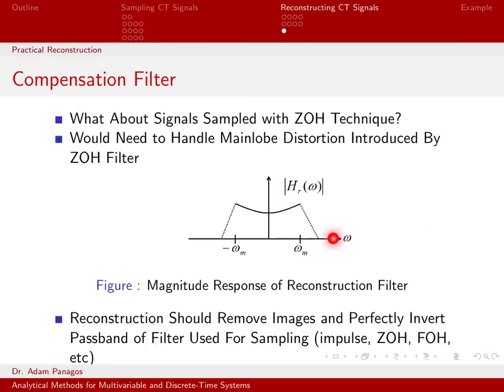So this reconstruction filter for zero-order hold sampling perfectly removes all the images and perfectly inverts the passband of the original filter that we used. This is basically what we want to do for any type of sampling technique. For zero-order hold filtering, we had a low-pass filter that rolled off in a certain way, so we undo it with the inverse. If you do a first-order hold filter, it's going to have a different characteristic. Whatever that sampler characteristic has in the frequency domain to begin with, you want to invert it when you do your reconstruction. We just drew one cartoon here, but that's the strategy for any type of reconstruction filter.